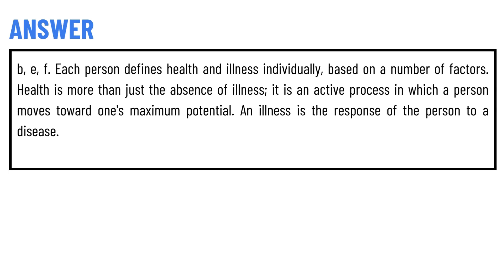The correct answers are Option B, E, and F. Each person defines health and illness individually based on a number of factors. Health is more than just the absence of illness — it is an active process in which a person moves towards one's maximum potential. And illness is the response of the person to a disease.